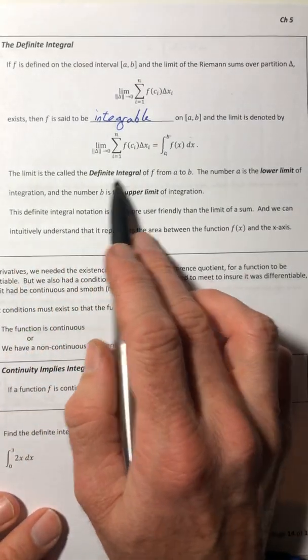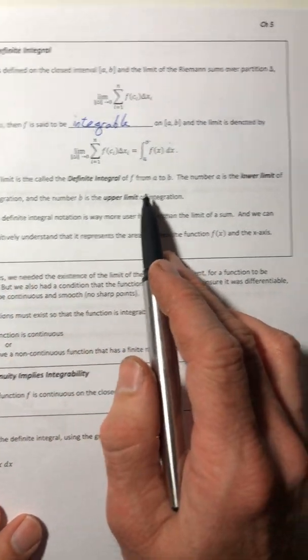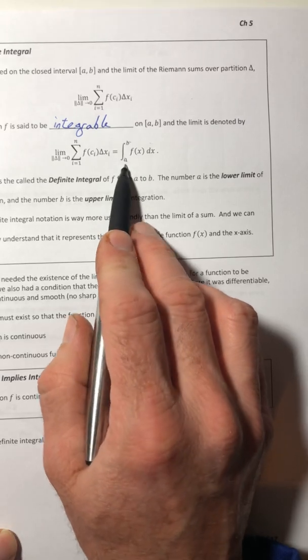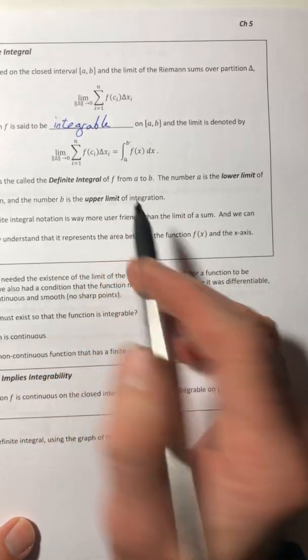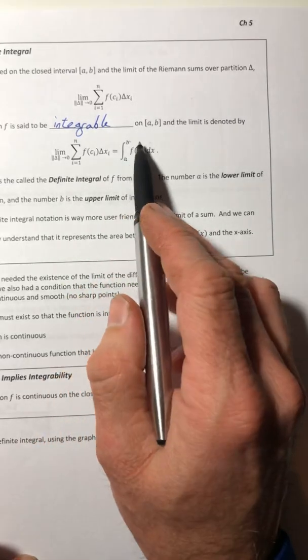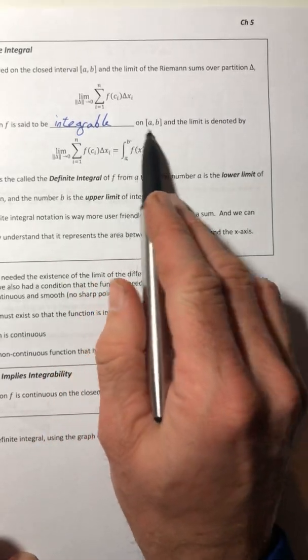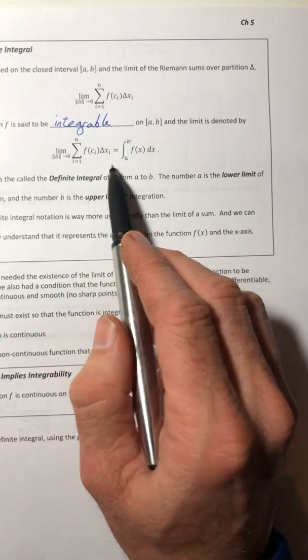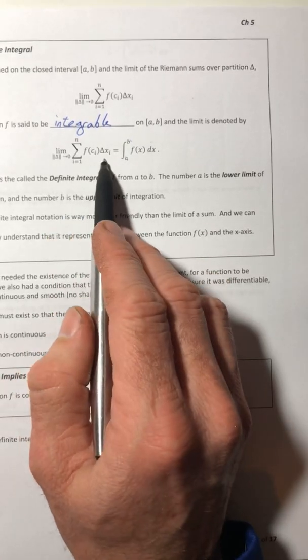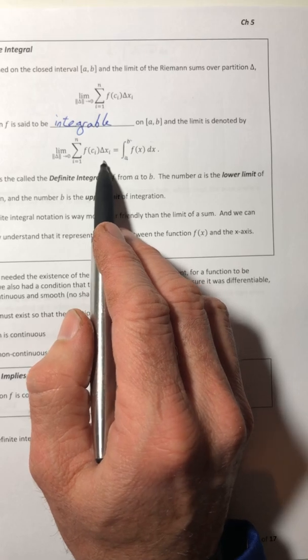so it's still kind of got a height and it's still got that width to it. So the limit, it's called the definite integral of f from a to b, so this number a, that's your lower limit of integration, and then the b is the upper limit, so this is a lot easier to keep writing instead of having to write that stupid thing over and over and over. I mean, it looks really cool,